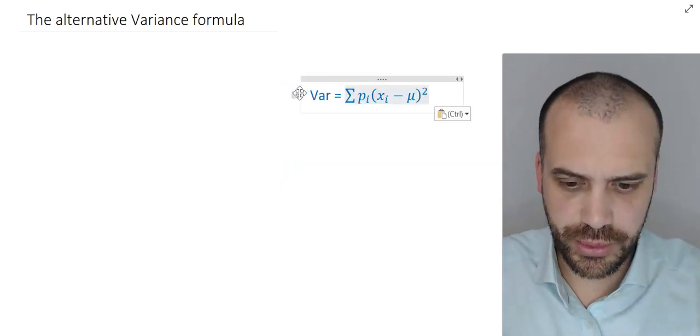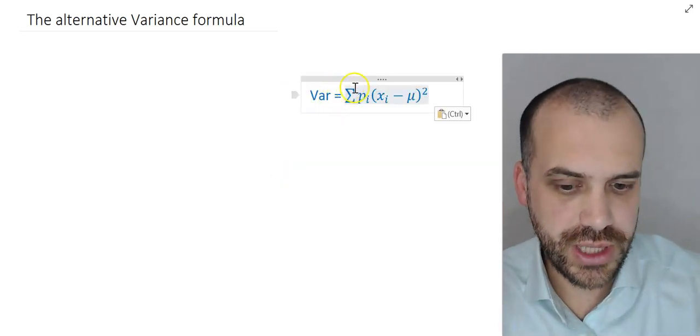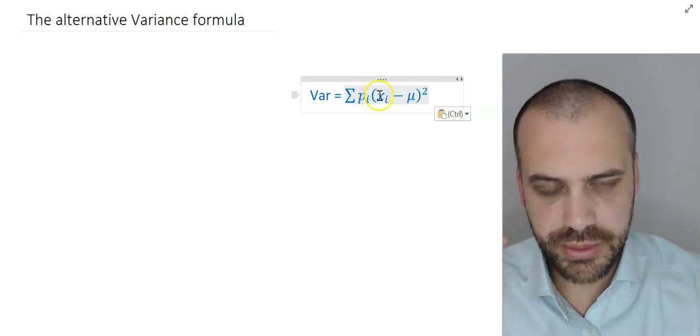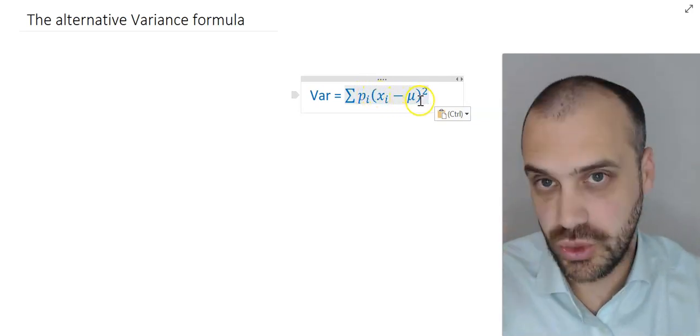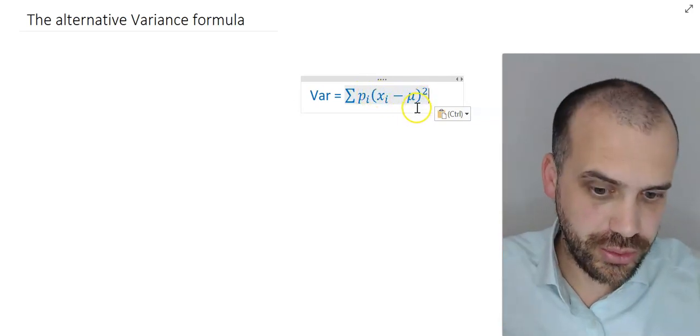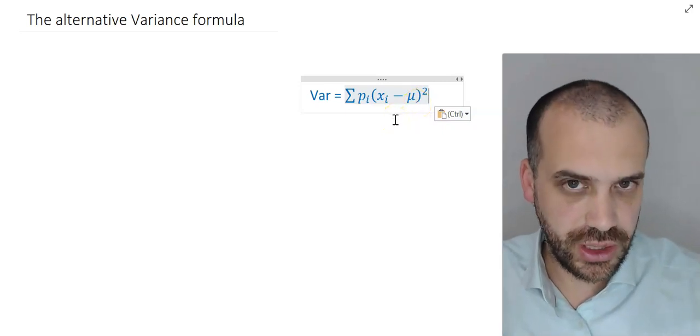So remember when I told you that the variance formula was variance equals the sum of probability times x minus mean squared? That's true, but there is another variance formula that's also really neat.